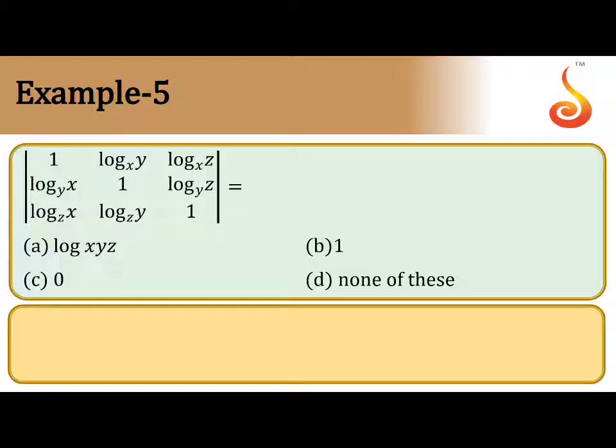So read the question: the determinant has 1, log_y(x), log_z(x) in the first row; log_x(y), 1, log_z(y) in the second row; log_x(z), log_y(z), 1 in the third row is given.